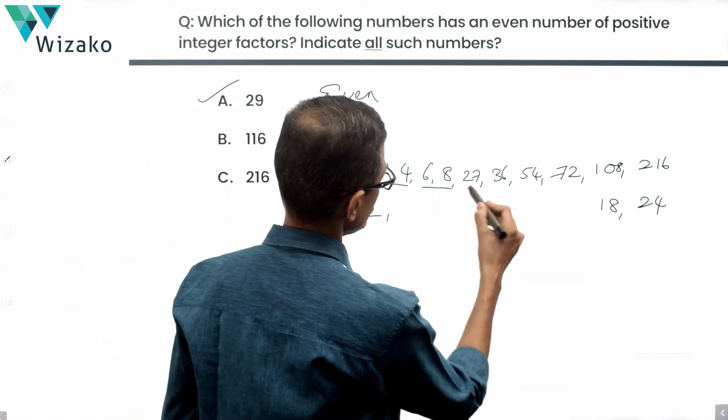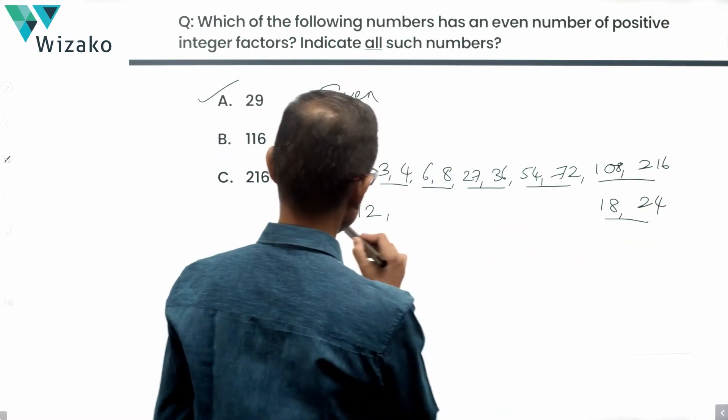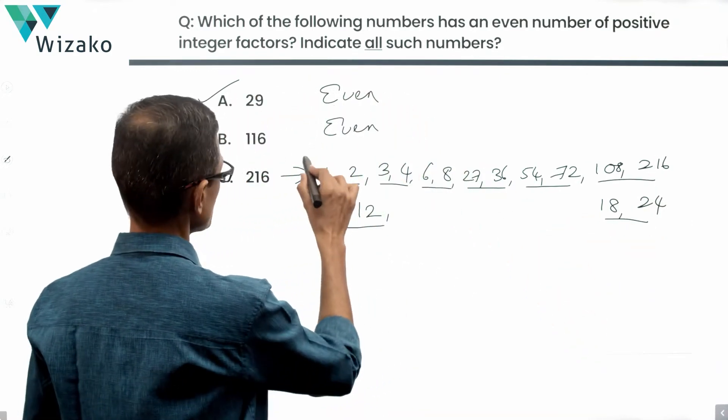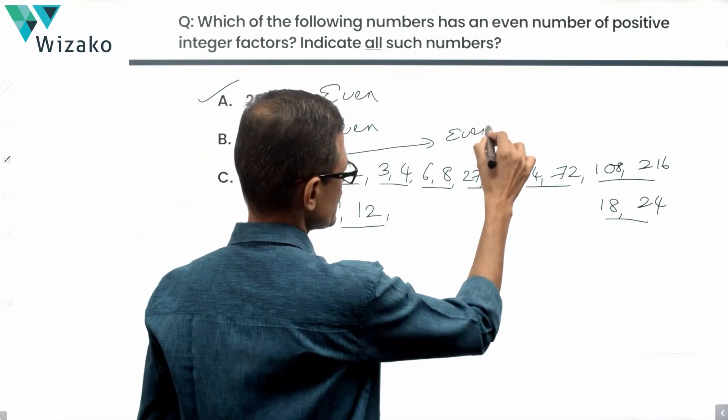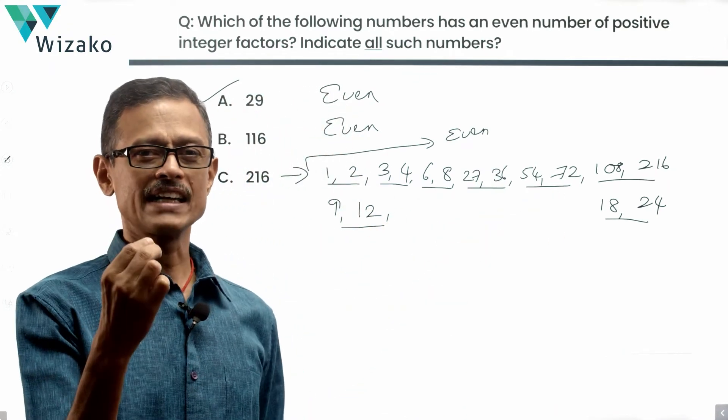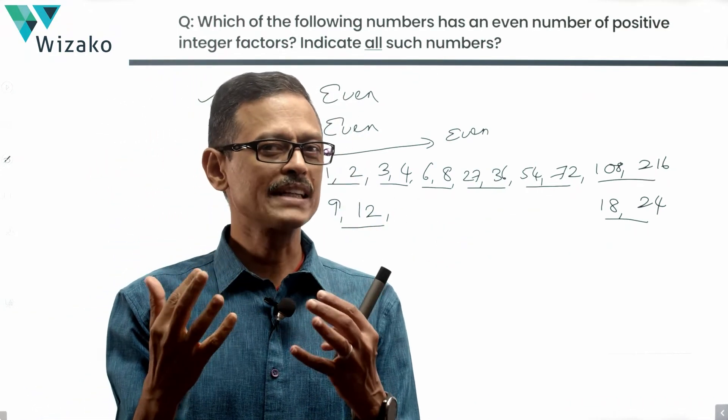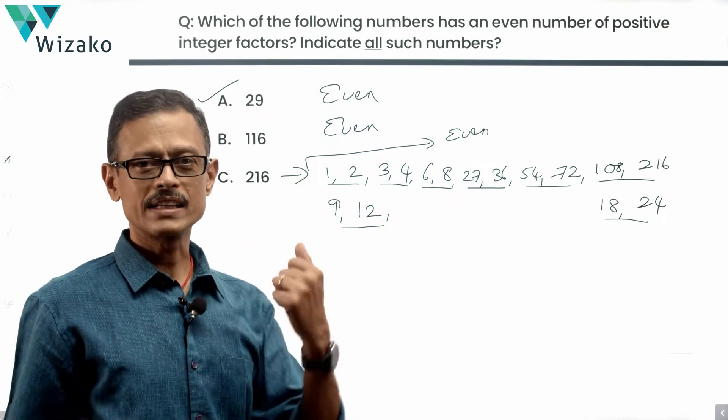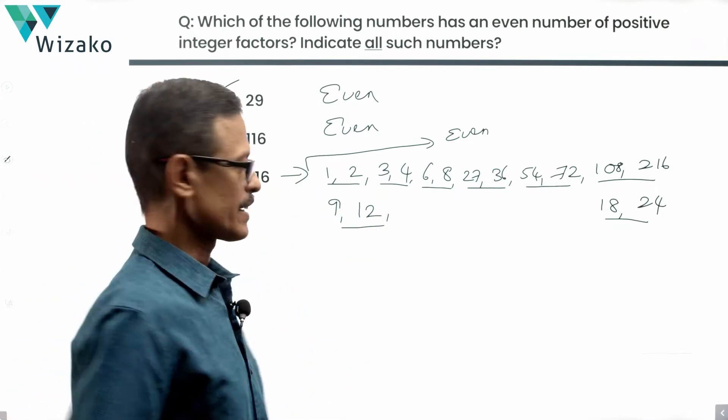We have 2, 4, 6, 8, 10, 12, 14, 16. Yes, even number of factors. But I did this entire listing down to kind of highlight, seeing that how cumbersome it is to list on and count and get it. We need to use this logic. That's the only way to have got this question right.